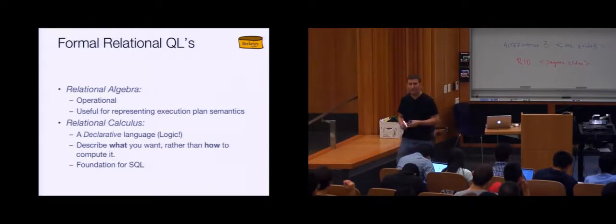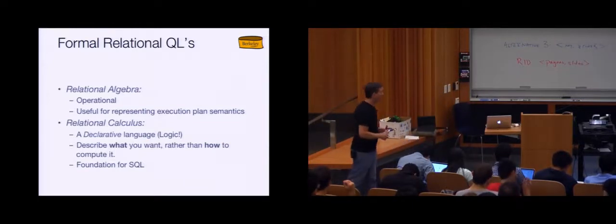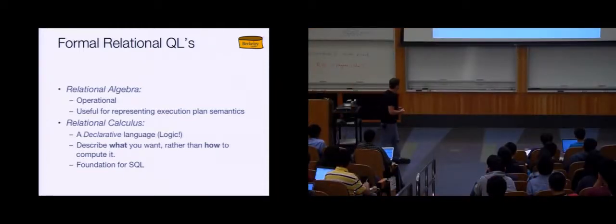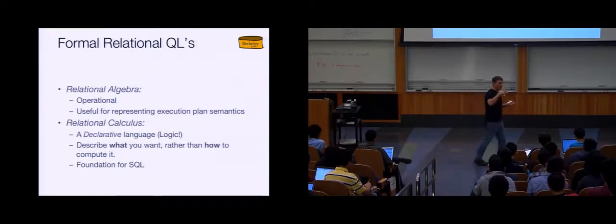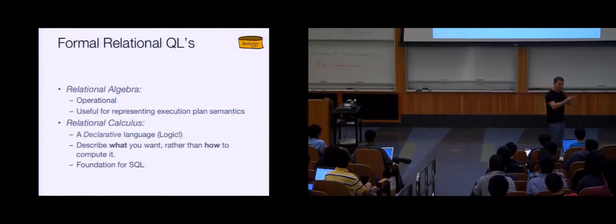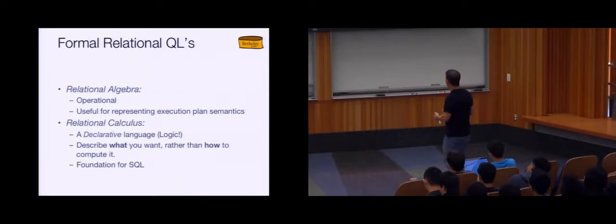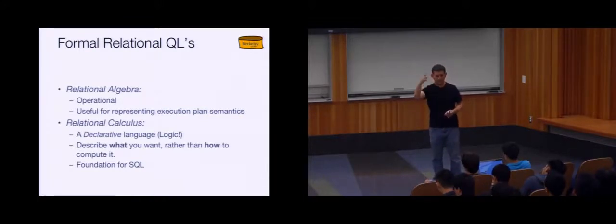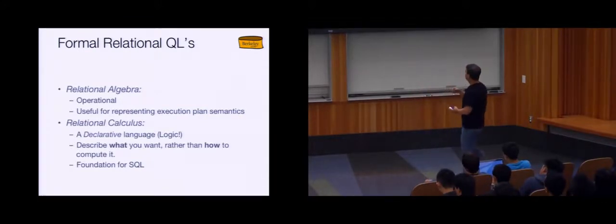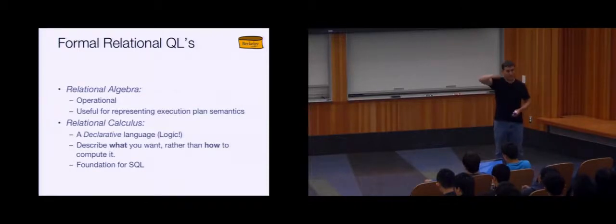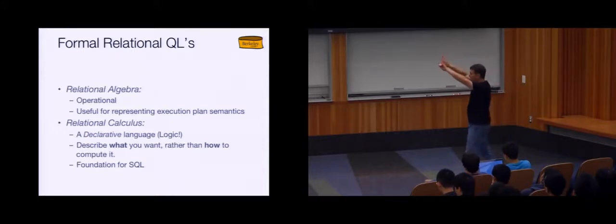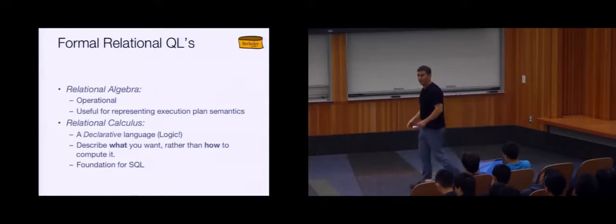There are only five operators in the relational algebra: selection, projection, cross product, set difference, and union. Each operation returns a relation, so you can compose them together and string together functional expressions of these operators. Briefly: selection selects a subset of rows — horizontal decisions. Projection retains only desired columns — choosing which vertical columns you want. Cross product combines two relations and concatenates their results. Set difference and union are familiar set operations but over relations.